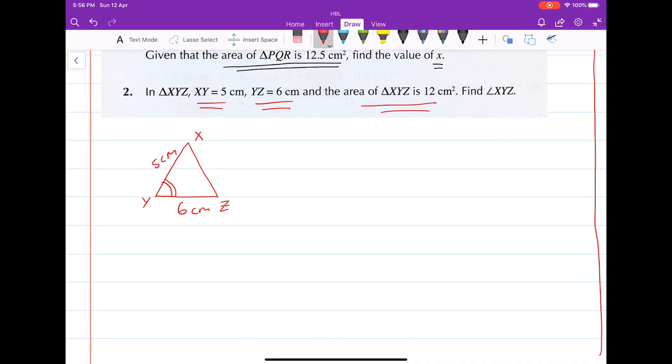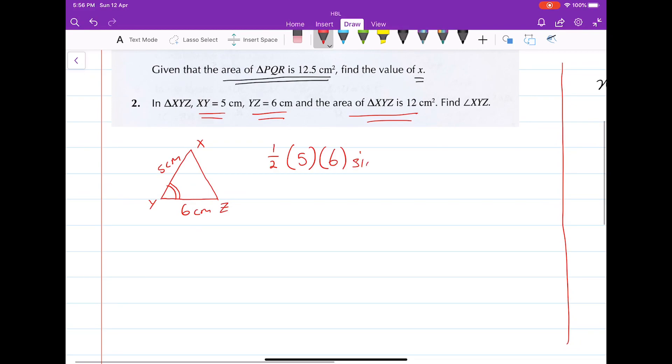Let's use our area of triangle formula and generate an equation. In this case, we have half times 5 times 6, and then the sine of the angle which is what we want to find, sine angle XYZ is given as 12. Let's move things around such that we get this equation.